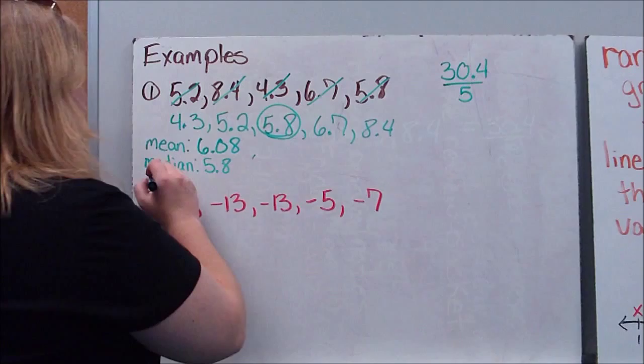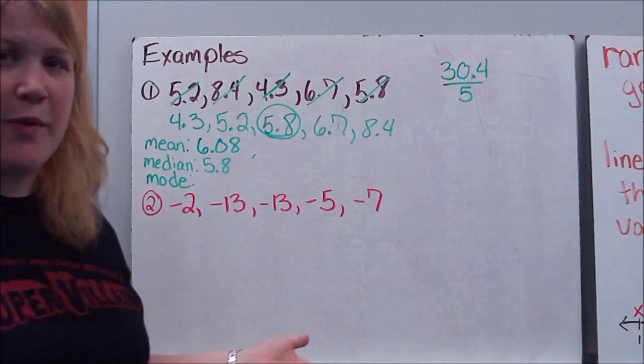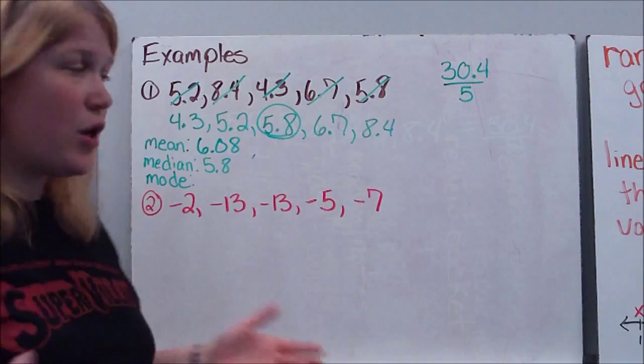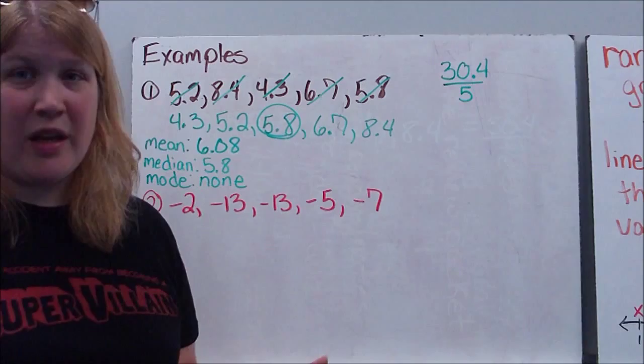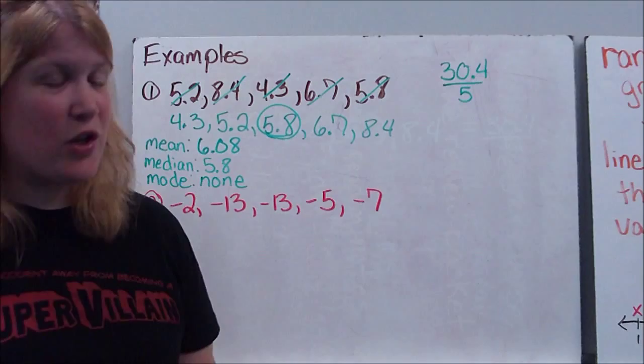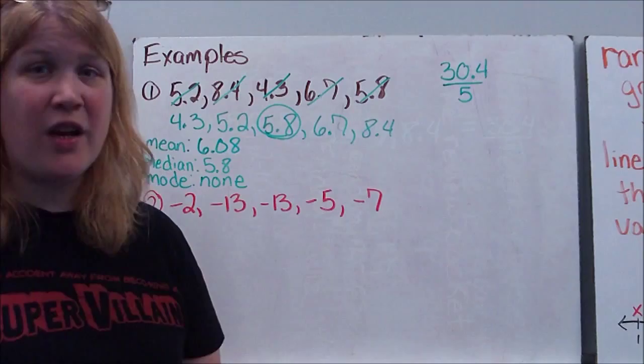My mode here, mode refers to the number that shows up the most. Is there any number here that appears more often than any other? No. So what I'm going to write is none. And here's what I'm going to tell you. A common error I see on this is children try to write zero because there isn't one. Zero is a number. Zero could be the mode in a set of data. So don't write zero. If there's no mode, write no mode or none or NA for not applicable, but do not write zero.